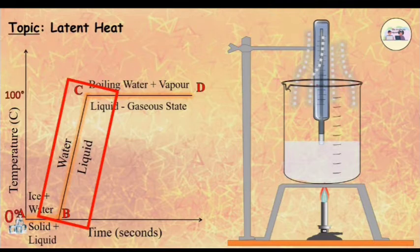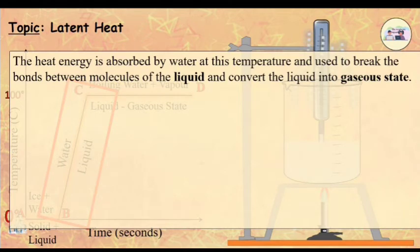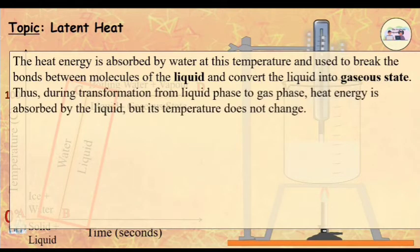Line BC in the graph represents rising temperature of water from 0 to 100 degrees Celsius. The heat energy is absorbed by water at this temperature and used to break the bonds between molecules of the liquid and convert the liquid into gaseous state.